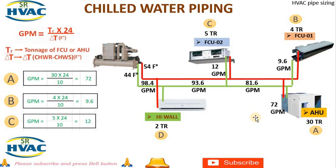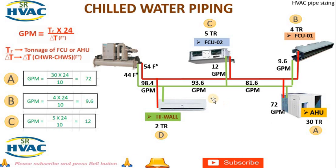The GPM for segment B will equal the sum of GPM for FCU1 plus the GPM of the AHU: 72 + 9.6 = 81.6 GPM. The GPM for segment A+B+C will equal the GPM of the AHU plus FCU2: 81.6 + 12 = 93.6 GPM. Including the high-wall unit at 4.8 GPM, the total becomes 93.6 + 4.8 = 98.4 GPM.